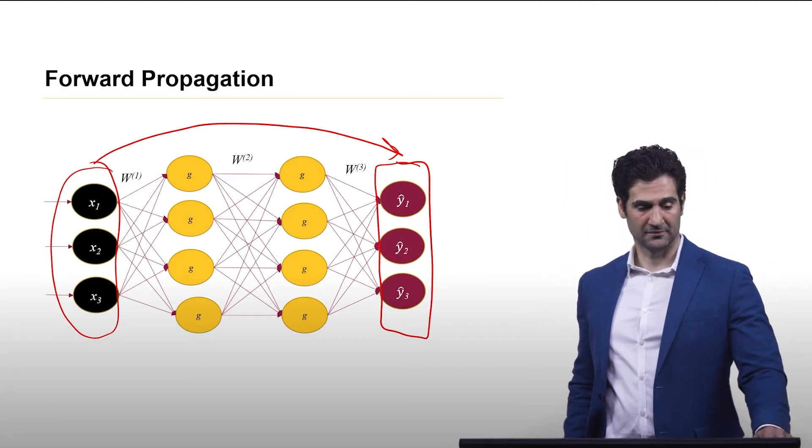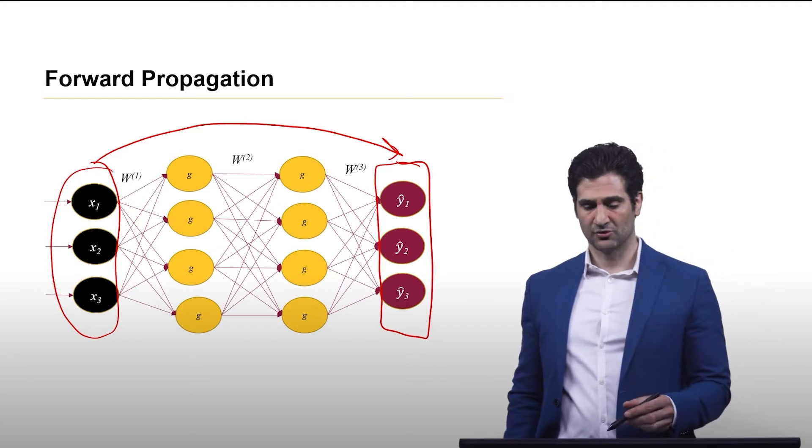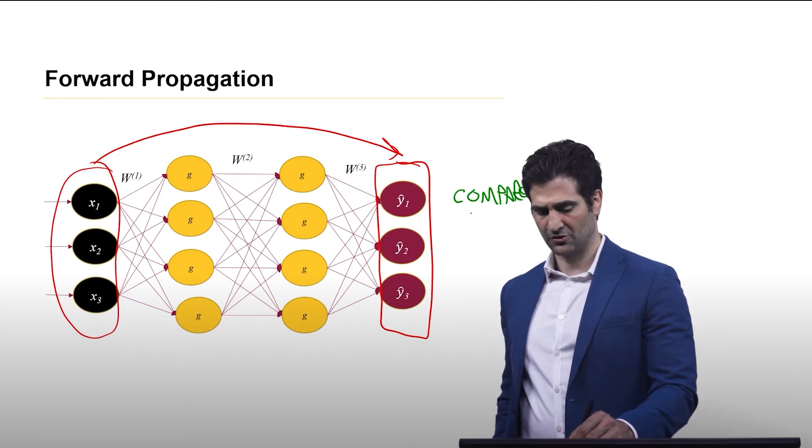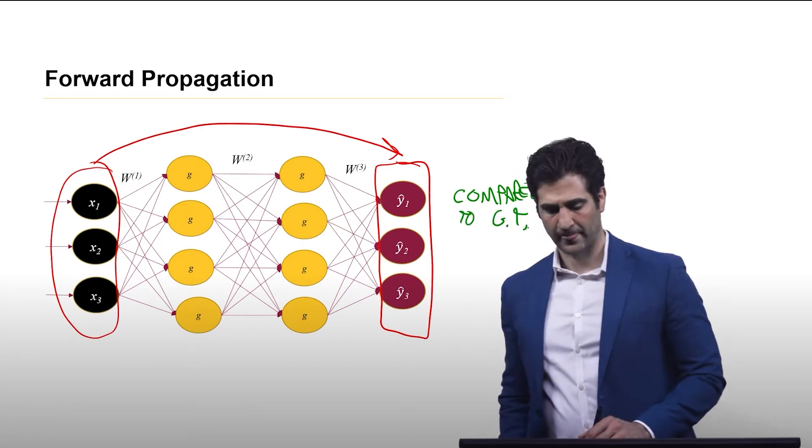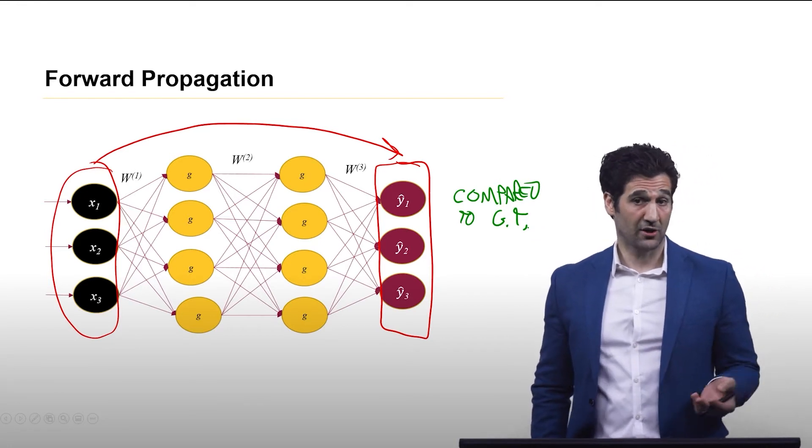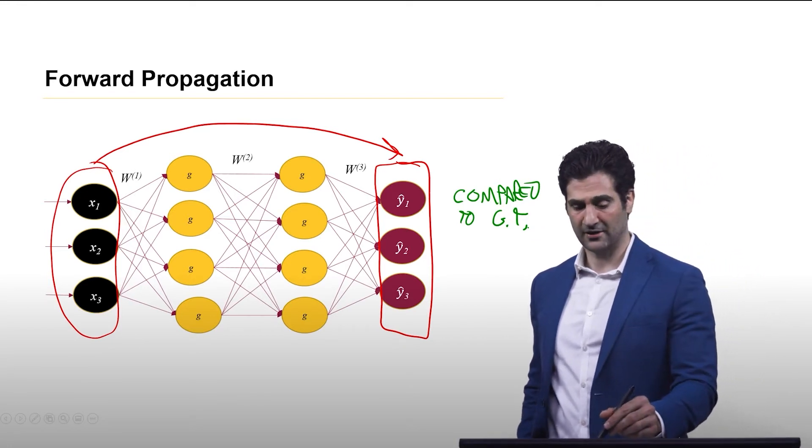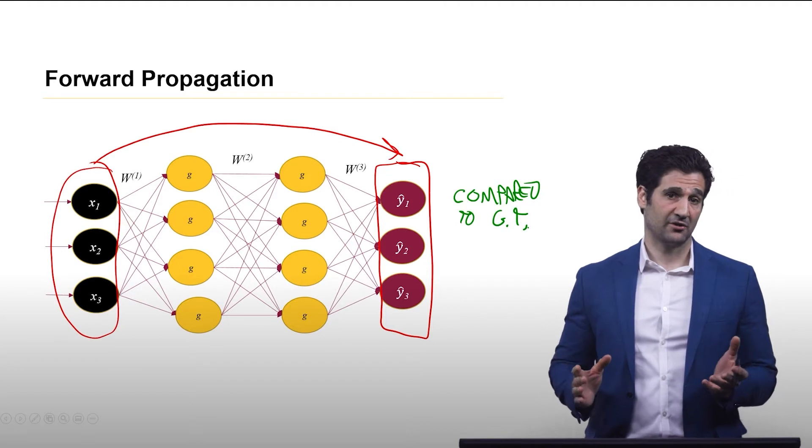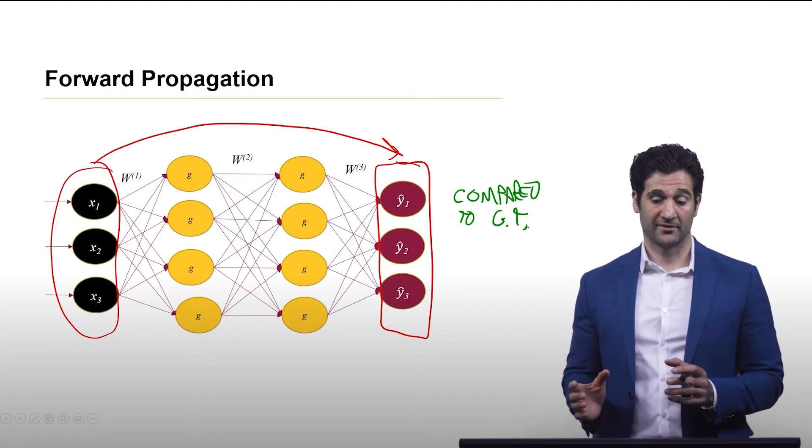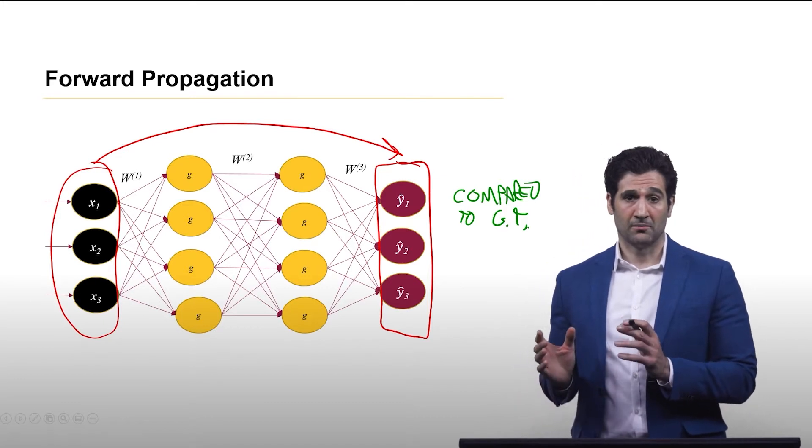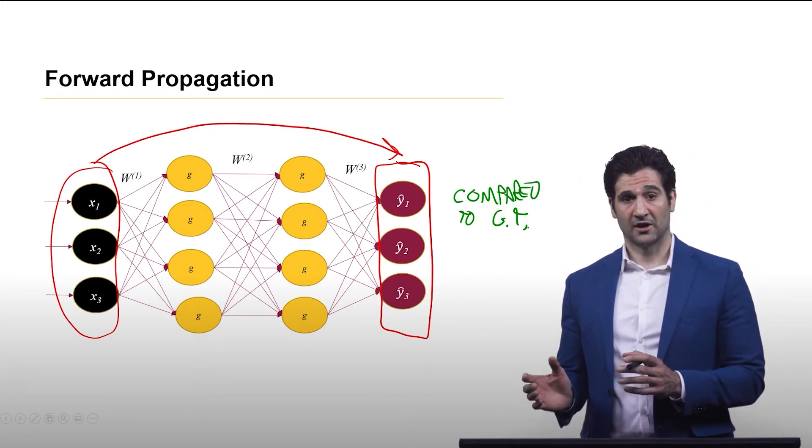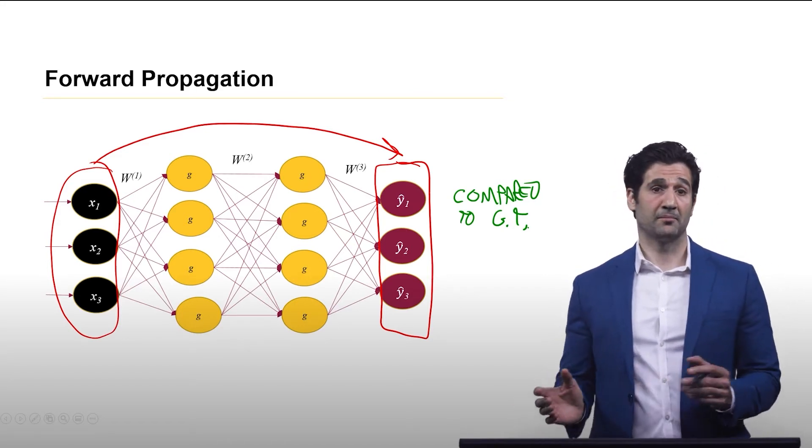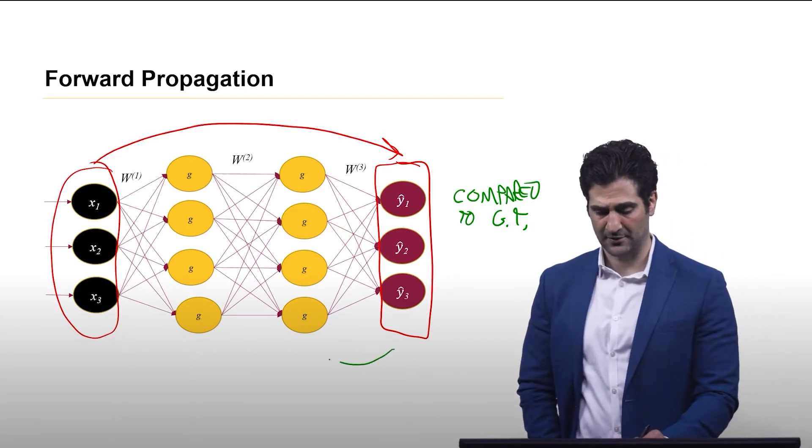Now, what we will be doing, once we have that output, these will be compared to ground truth. And we will use a loss function to measure the difference between the output, those y hat variables, and the ground truth. And based on that loss function and the derivative of it, we will compute partial derivatives with respect to each weight, but we will do that in an iterative way going back through the entire network, and that's the back propagation step.